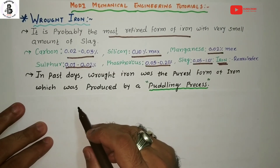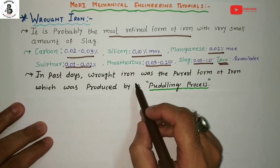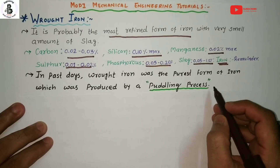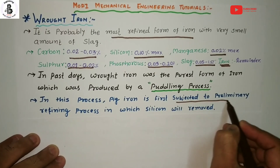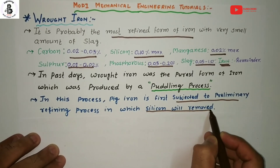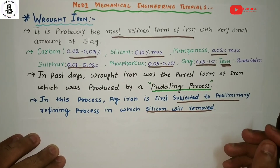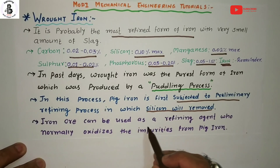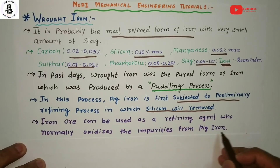The main question is: how is wrought iron manufactured? In the past, wrought irons were the purest forms of iron and were basically produced by the puddling process. In this process, the pig iron is first subjected to a preliminary refining process, then the silicon is removed from the composition. After the removal of silicon, iron can be used as a refining agent, which oxidizes the impurities from the pig iron.